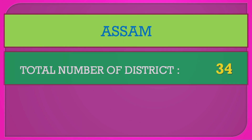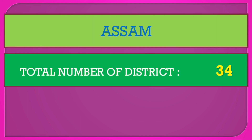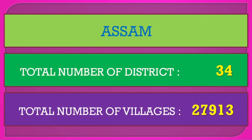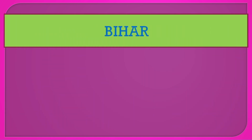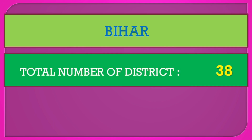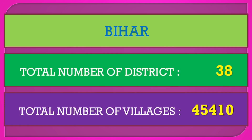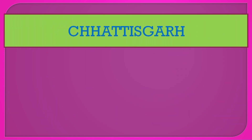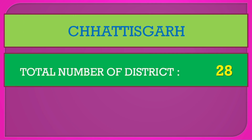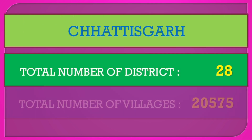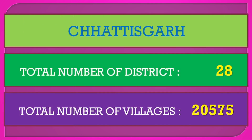Assam: total number of districts 34, total number of villages 27,913. Bihar: total number of districts 38, total number of villages 44,410. Chhattisgarh: total number of districts 28, total number of villages 20,575.